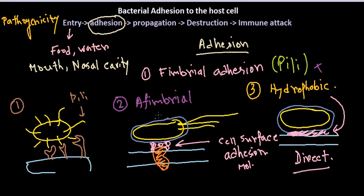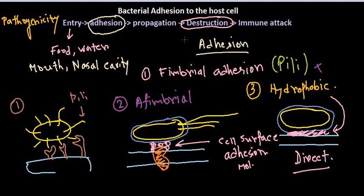Welcome back. In the previous video we talked about the adhesion of bacterial cells with the host cell and we saw the different sequential stages for a perfect pathogenicity of a bacteria. In this video we'll be talking about the destruction part, which is caused by the release of toxins.